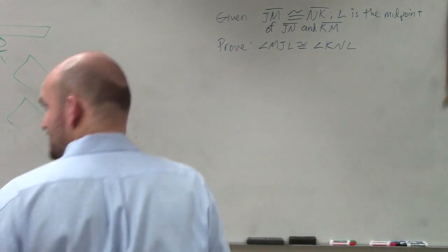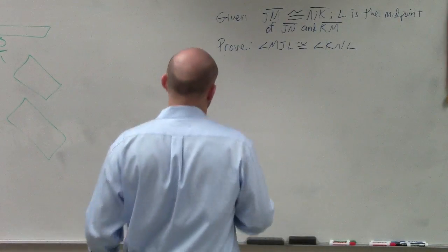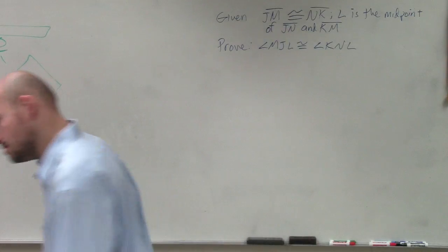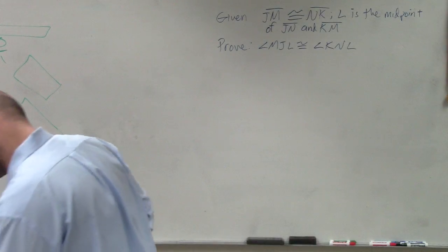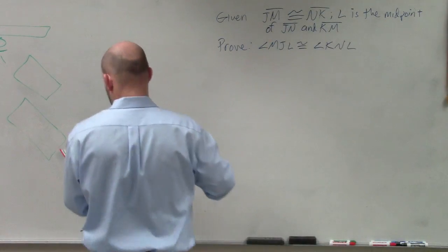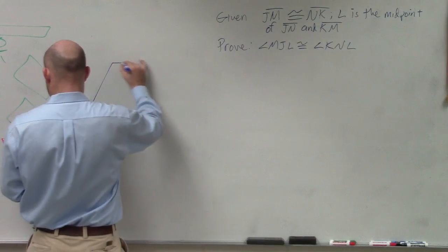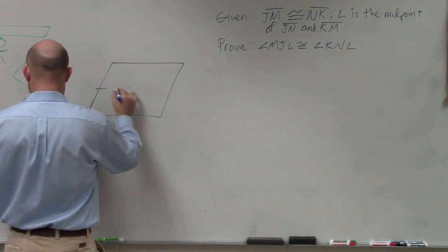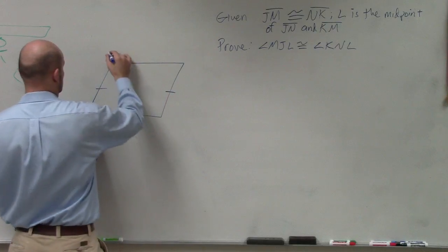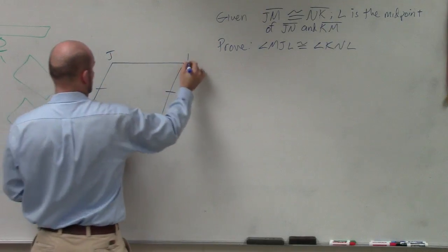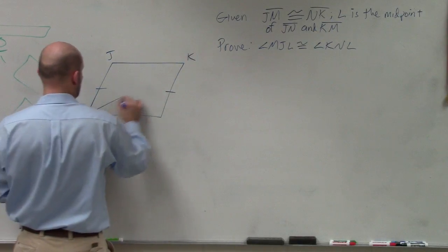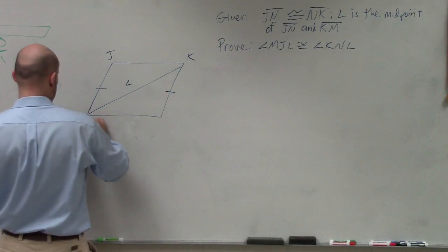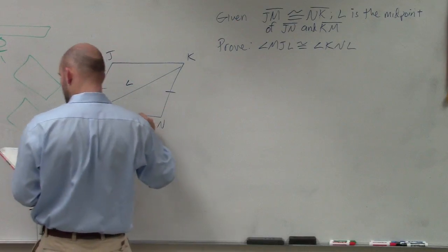In this example, we need to show that angle — I didn't even write down what the figure looked like. So we have J, K, L, M, N.